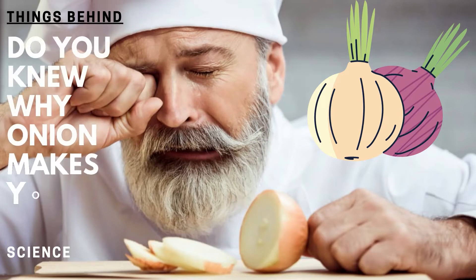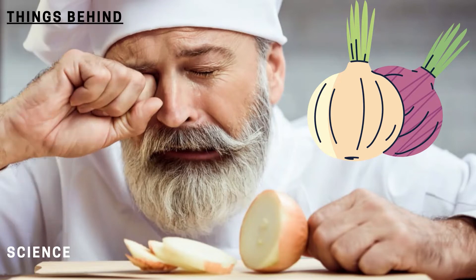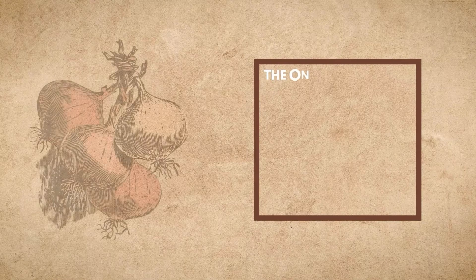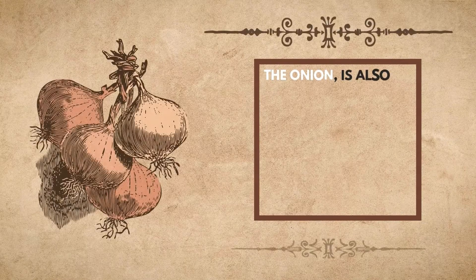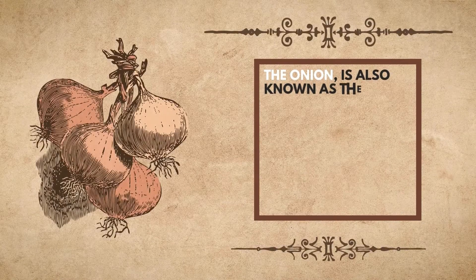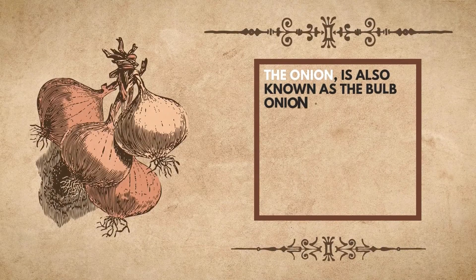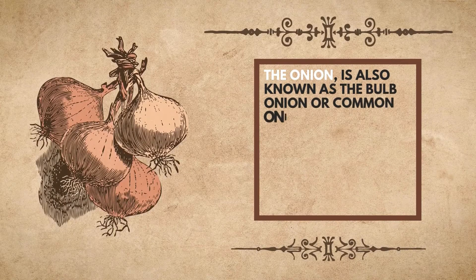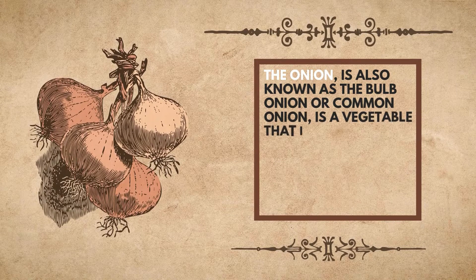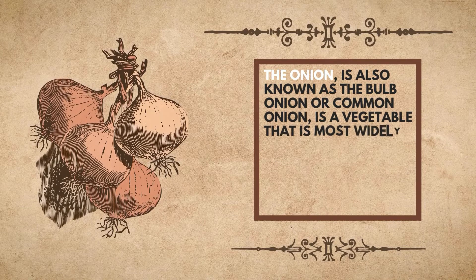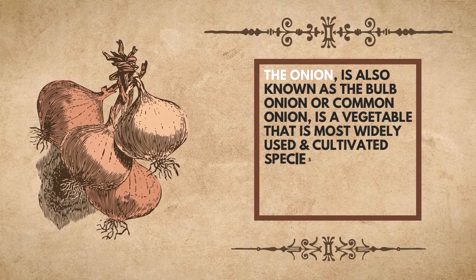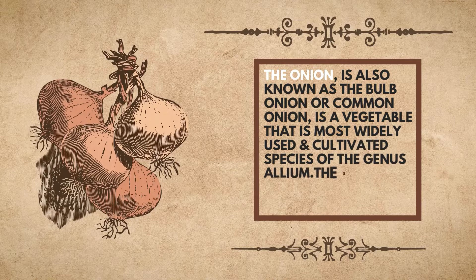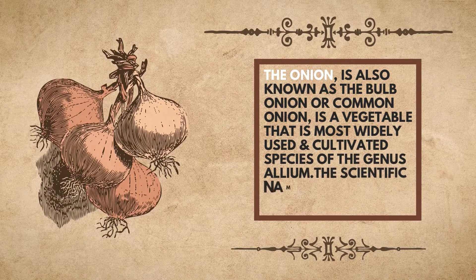Do you know why onion makes you cry? The onion, also known as the bulb onion or common onion, is a vegetable that is the most widely used and cultivated species of the genus Allium.